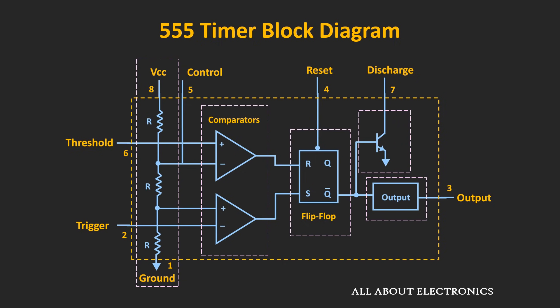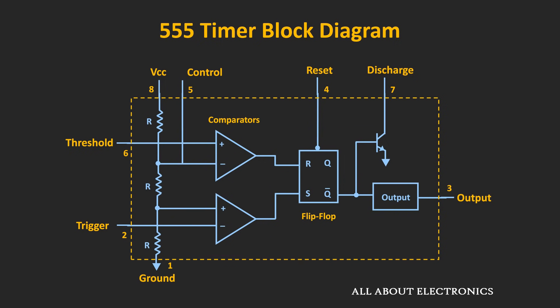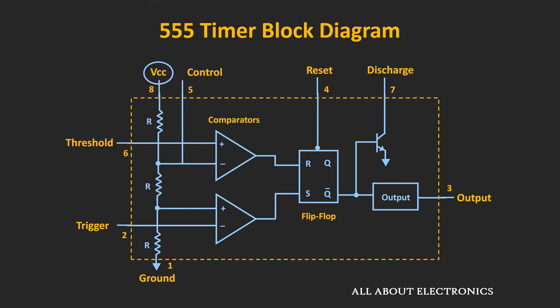At the same time, we will also understand the purpose of individual pins. The purpose of pin number 1, 3, and 8 is pretty straightforward, so let's first talk about these three pins. In this 555 timer IC, pin number 8 is the supply voltage pin, and usually the supply voltage in the range of 4.5 to 15V is applied at this pin. Pin number 1 is the ground pin and it is connected to the circuit ground. Pin number 3 is the output pin — it is capable of driving TTL loads and can source or sink up to 200mA of current.